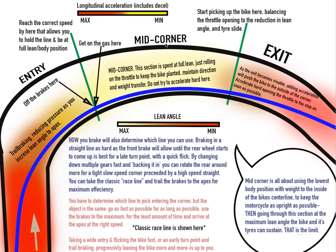Mid-corner: look at this section here. The point is to reach the correct speed that allows you to hold the line and be at full lean and body position. On any corner it's going to be different for every bike and rider combination depending on your tires, your confidence, and skill level. What is the maximum speed you can go through here? Obviously if you go too fast you start to run wide, but what is the fastest you can get through this section? Mid-corner is all about using the lowest body position to keep the weight to the inside of the bike centerline.